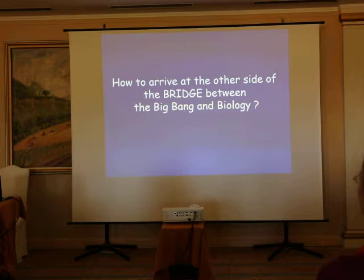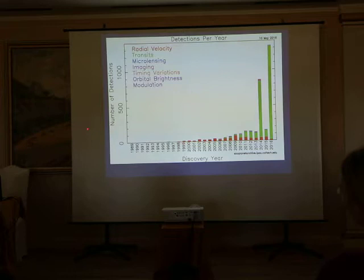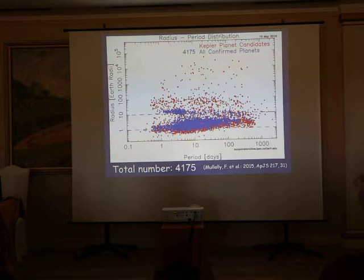How to arrive at the other side of the bridge between the Big Bang and biology? We have planetary system formation, planets formation, and thanks to Kepler — an observatory that was flying — we have detected, as of May 2016, many thousands of planets. The blue points are the confirmed planets and the red points are the candidate planets.